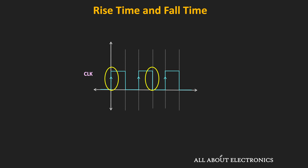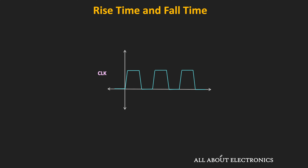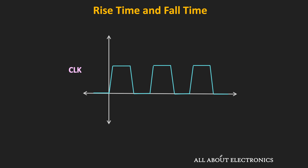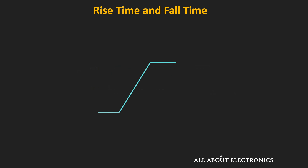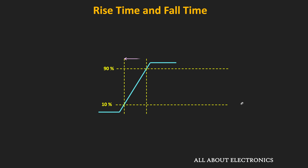But actually, the clock signal will take certain time to go from the low to high as well as from high to low level. The rise time and the fall time define the time required by the signal to go from the low level to the high level and vice versa. Generally, these times are measured between the 10% and 90% of the signal level. The rise time is the time required by the signal to reach from the 10% to the 90% of the signal amplitude.